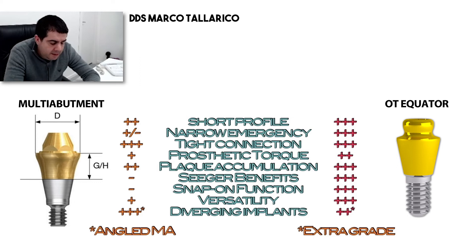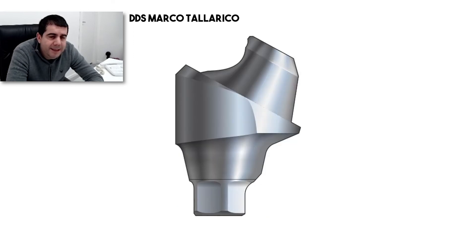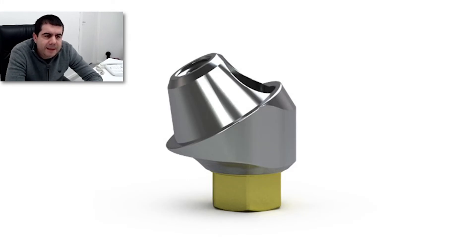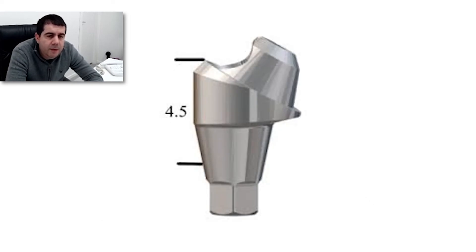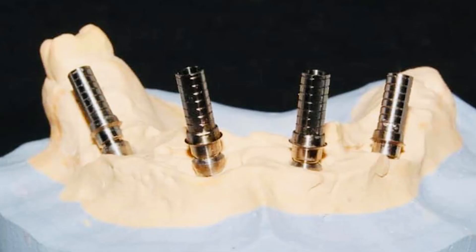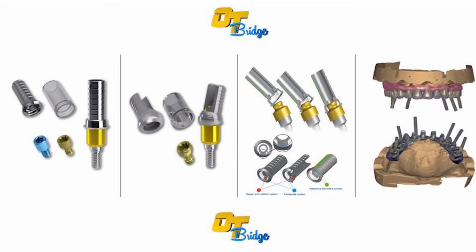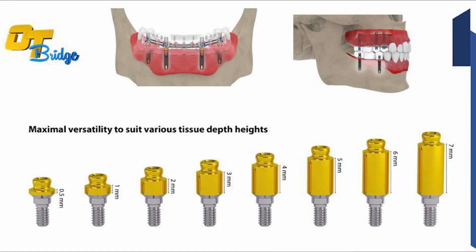Multi-unit abutments can compensate up to 104 degrees of implant divergence, as shown in the image, but this requires multi-angulated components with precise degree increments such as 30 degrees, which increases problems related to height and bone profile management. The OT equator abutments use specific modified sleeves reaching correction between 80 and 85 degrees, with the practical advantage of counting on a unique solution. An additional point concerns the narrow profile emergency, which offers practical advantages in reducing bone absorption and during the insertion phases of the abutments.